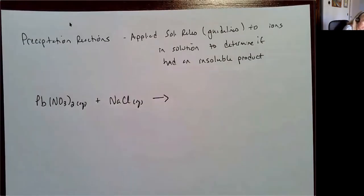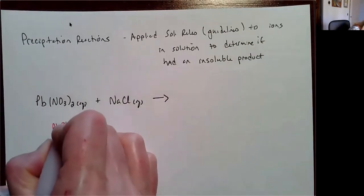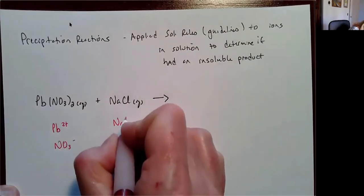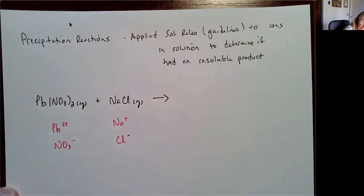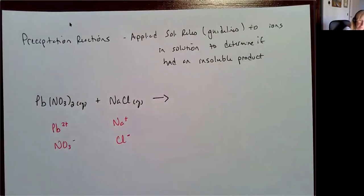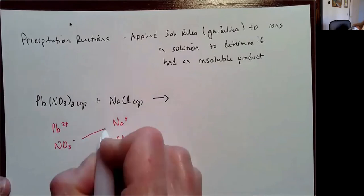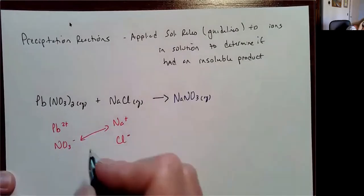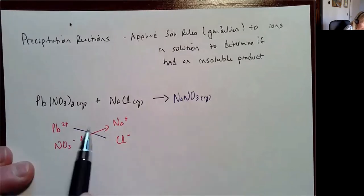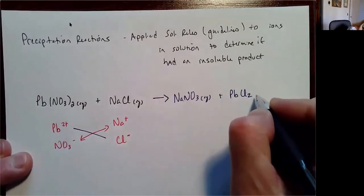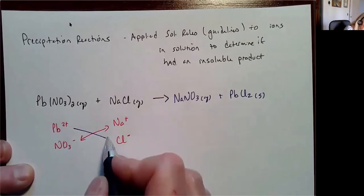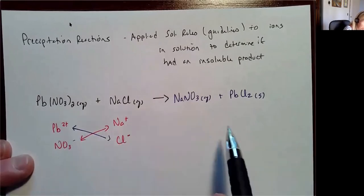I would look at all of these ions. I have lead ions, nitrate ions, sodium ions, and chloride ions, and then I'm just going to look at my pairings. Is any of these going to form an insoluble product? This would form sodium nitrate, which is soluble, but my other product would be lead chloride, and I know from my solubility rules that that's going to be my insoluble product.